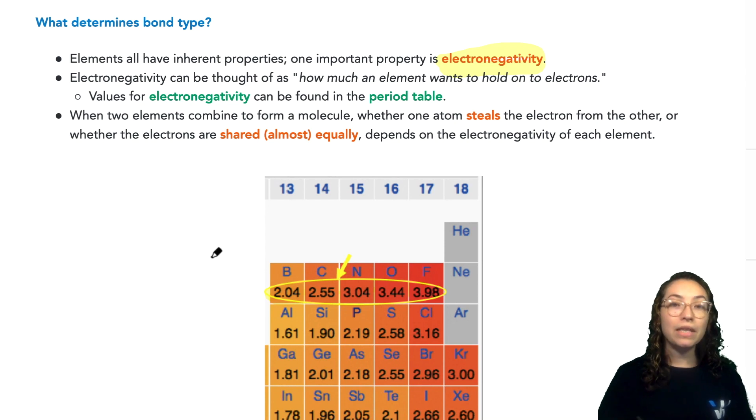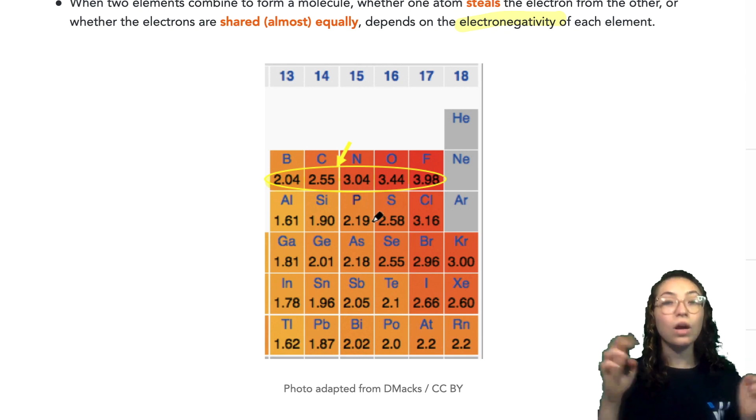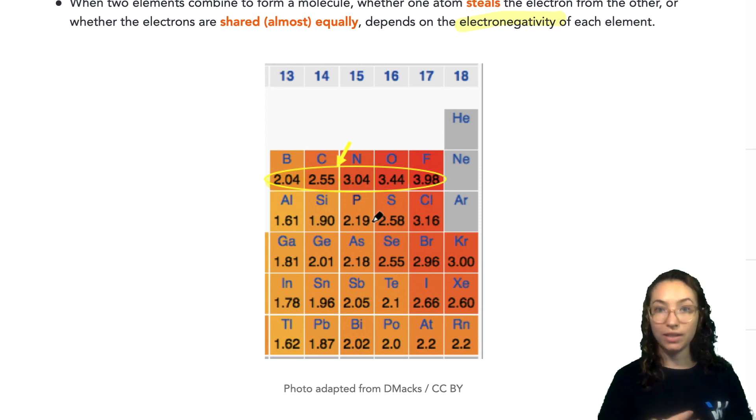When two elements then interact with one another and combine to form a molecule, whether one atom actually steals an electron from the other or whether that electron is shared equally between those two atoms or almost equally depends on the electronegativity of each of the elements. So in that case, the molecule that has the highest electronegativity will steal or take a greater share of the electrons for itself.